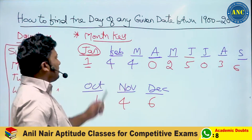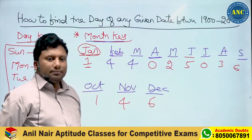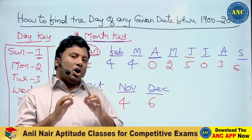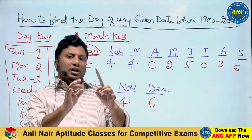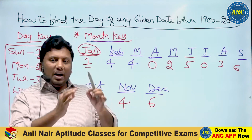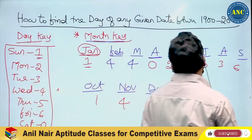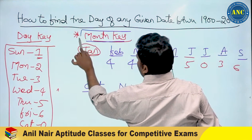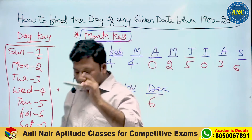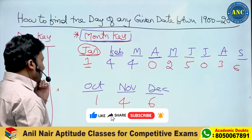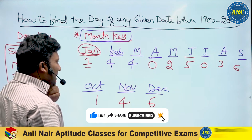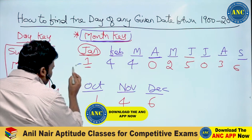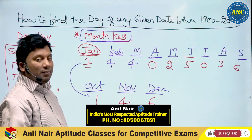Month key values: 1, 4, 4, 0, 2, 5, 0, 3, 6, 1, 4, 6. I hope it is clear. Now listen carefully — if you see here, January (1) and October (1) both have the same month key value.